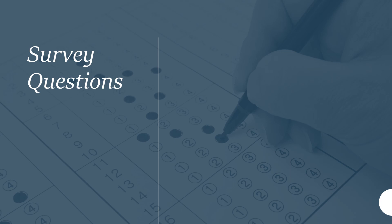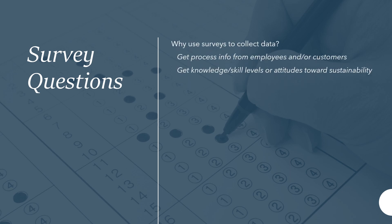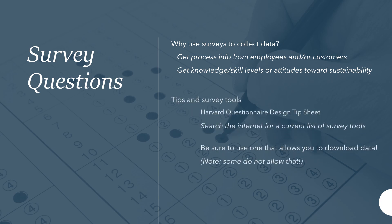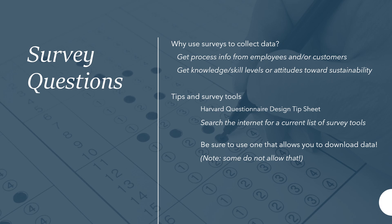One final idea for collecting data on processes or gaps is to use a survey with your stakeholder support. You can survey employees, customers, or students on where they see problems with the process or whether they are satisfied with the outcomes. Harvard has a really good tip sheet on how to write survey questions, and there are a lot of free survey tools you can find on the internet. I use Google Forms, but whichever one you use, be sure to use one that allows you to download data — not all of them do that. This is important because the default charts that many free surveys have do not allow you to present the information in better ways for your stakeholders.